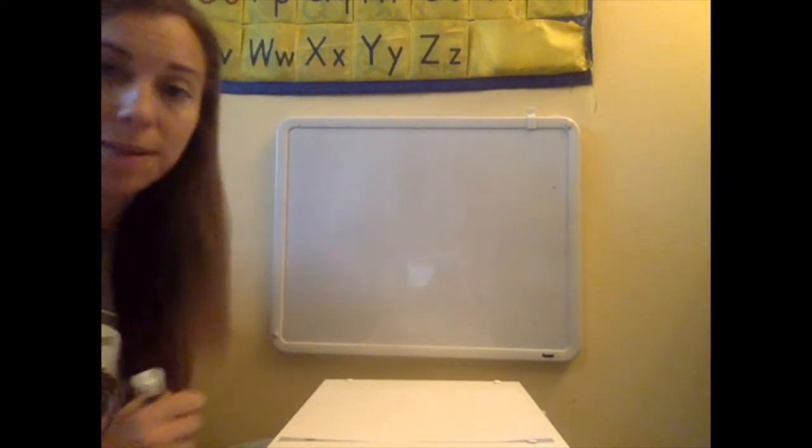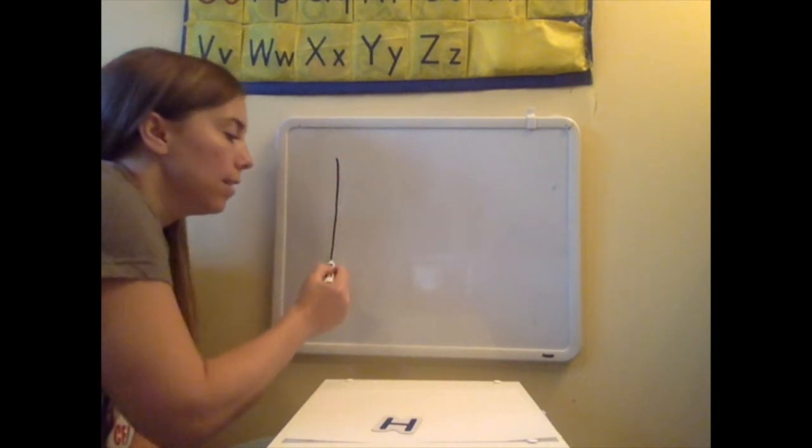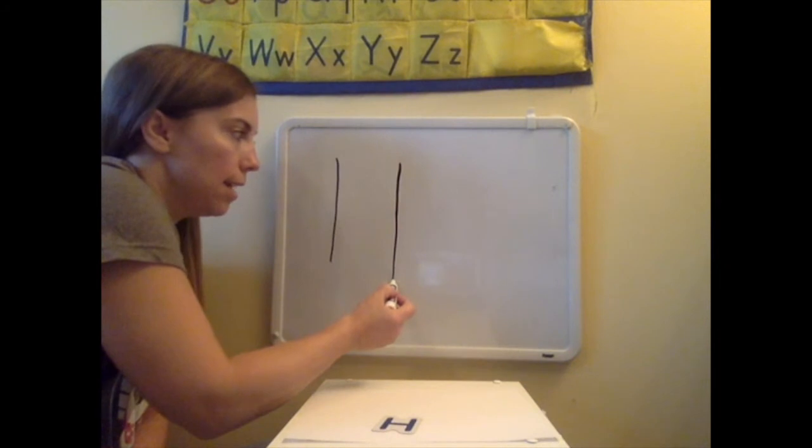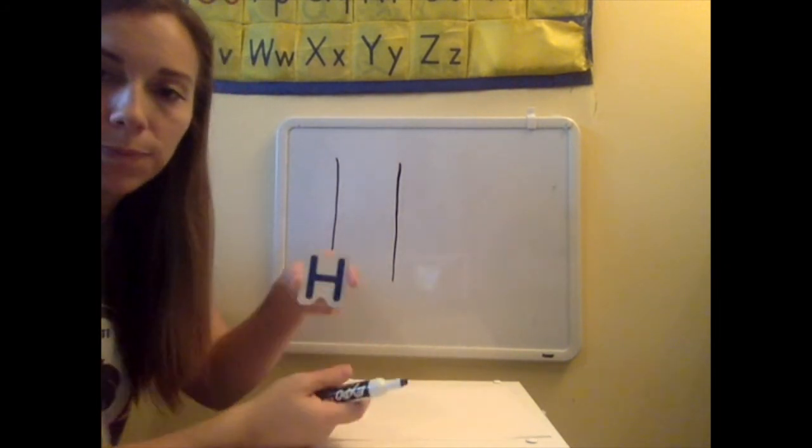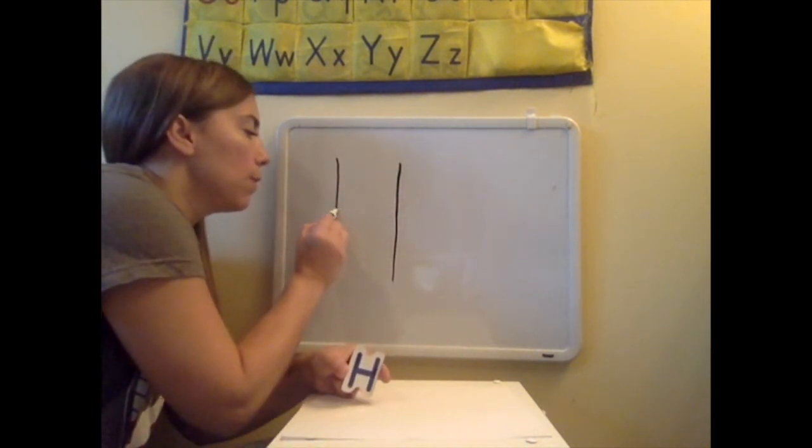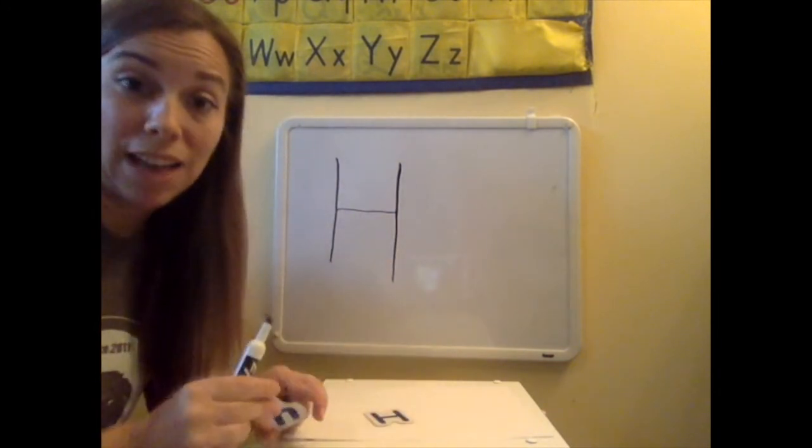Let's see if I can make the capital H. One line down here. One line down here. And then what's in the middle? A line across. A line that goes right through the middle from this one to this one. Very good. That's our capital H.